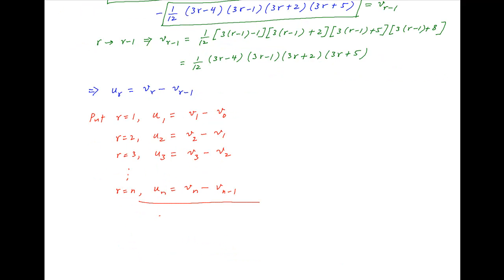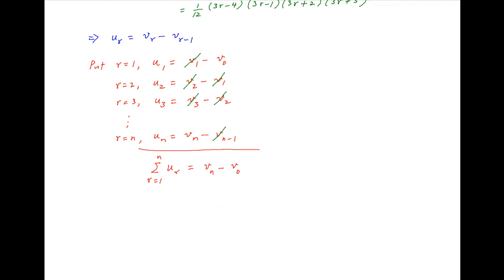Now, add up all of these equations. On the left-hand side, we have the sum of the n terms of the given series. On the right-hand side, v1 in the first equation cancels with v1 in the second equation, v2 in the second equation cancels with v2 in the third equation, and so on and so forth, till we are left with only two terms on the right-hand side. Therefore, the right-hand side is equal to vn minus v0.